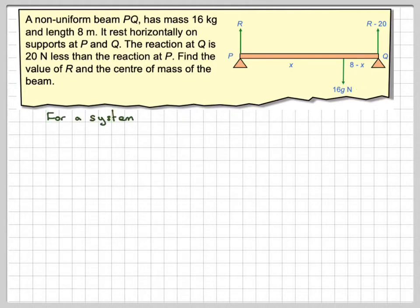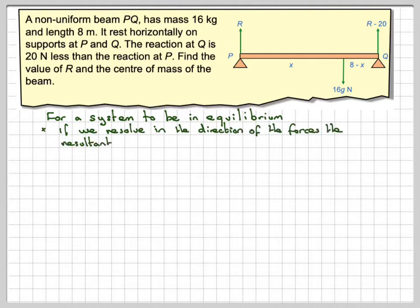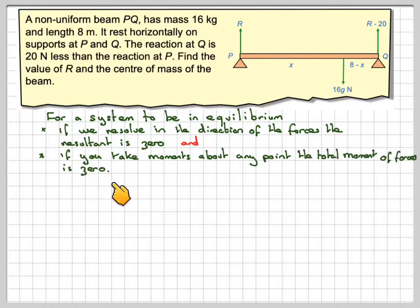For a system to be in equilibrium, we require two things. If we resolve in the direction of the forces, the resultant is zero. And if we take moments about any point, the total moment of forces is zero.